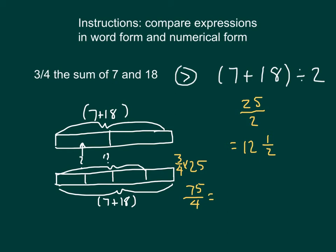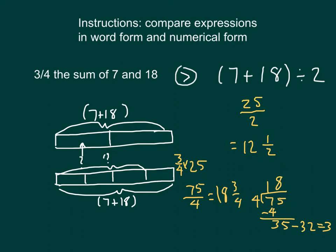Let's do a little bit of work here. That's 32, and that would be 18 and 3 fourths. 18 and 3 fourths is bigger than 12 and 1 half.